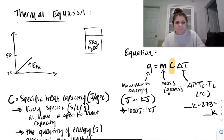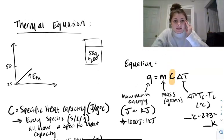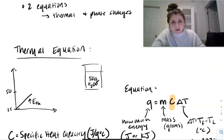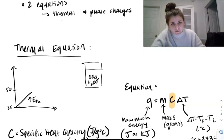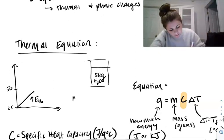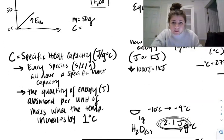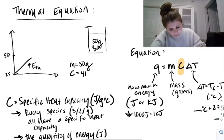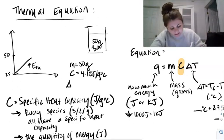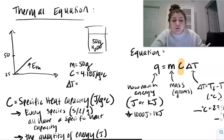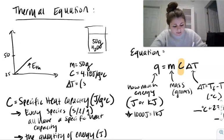So if we go back up here, if we actually wanted to solve this using that equation, so here, we know mass is 50 grams. We know the heat capacity for water, which I just told you is 4.18. And then delta T, which should be T final minus T initial. So here, our final temperature is going to be 50, and our initial temperature is going to be 25. So here, the change in temperature is 25.